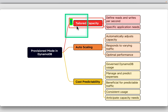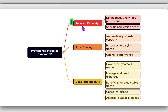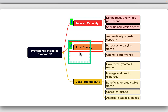In provisioned mode, users define the number of reads and writes they expect their applications to perform per second. This allows for tailored capacity based on specific business requirements. One of the key advantages of provisioned mode is the ability to use auto scaling, which automatically adjusts the table's provisioned capacity in response to varying traffic, ensuring optimal performance without manual intervention.